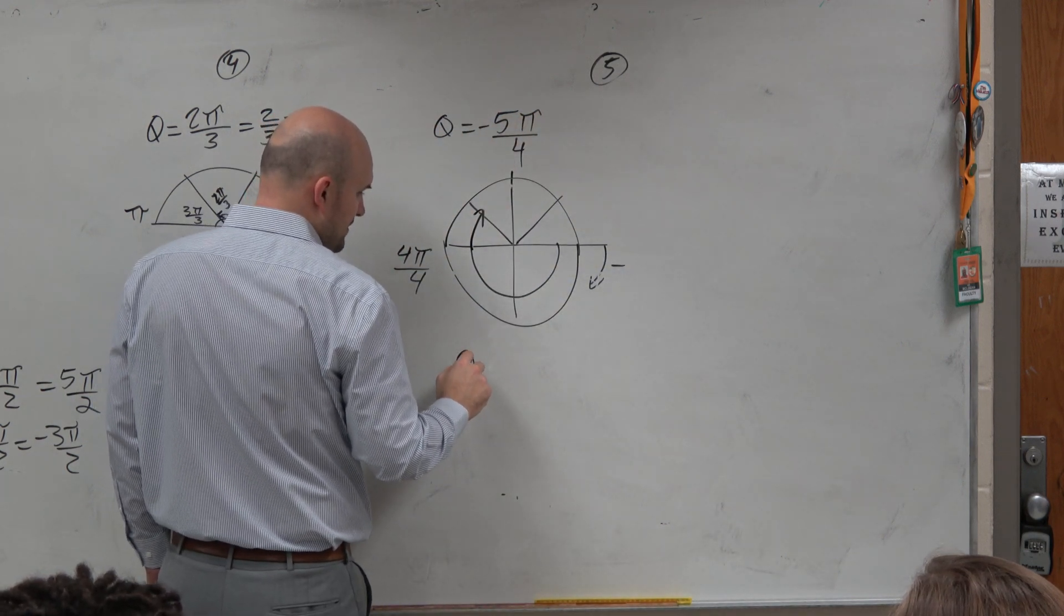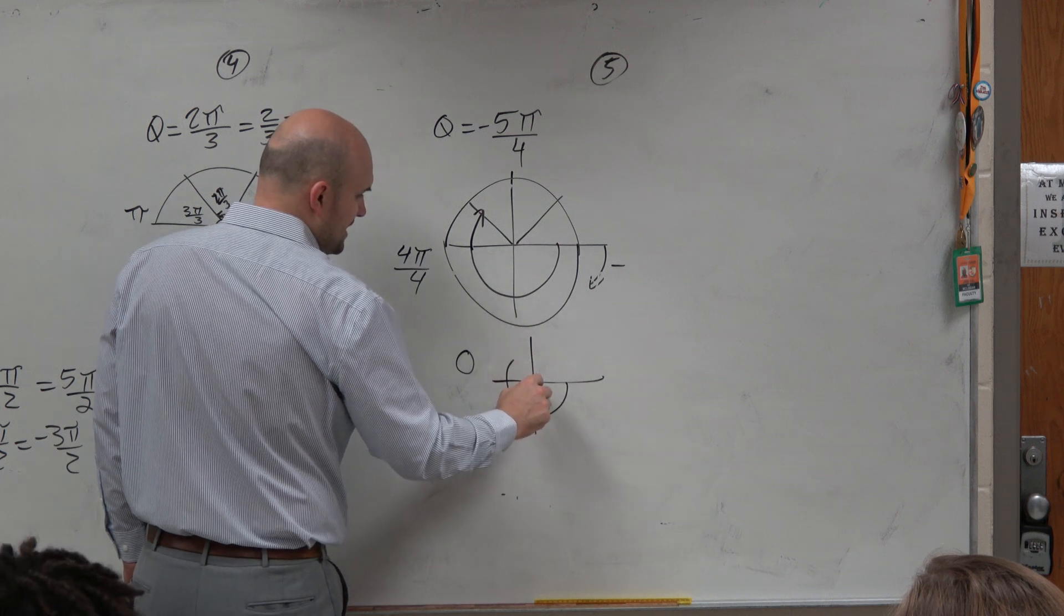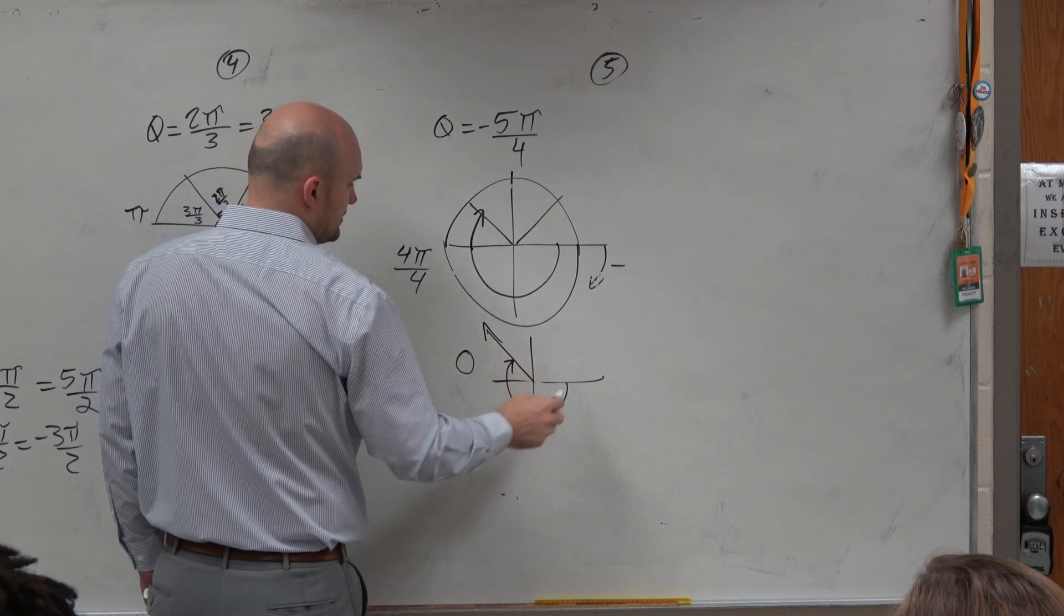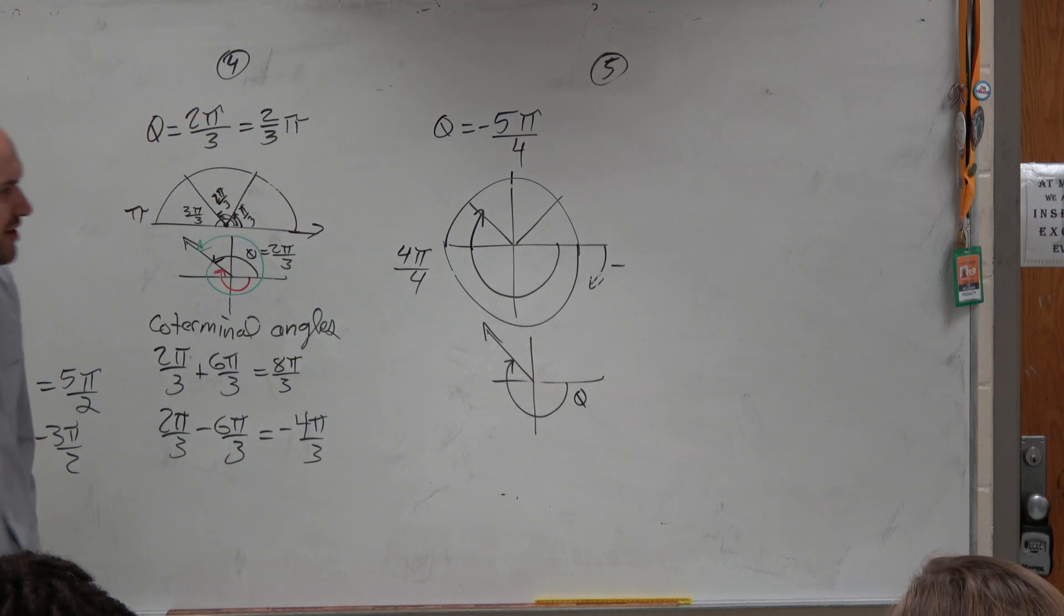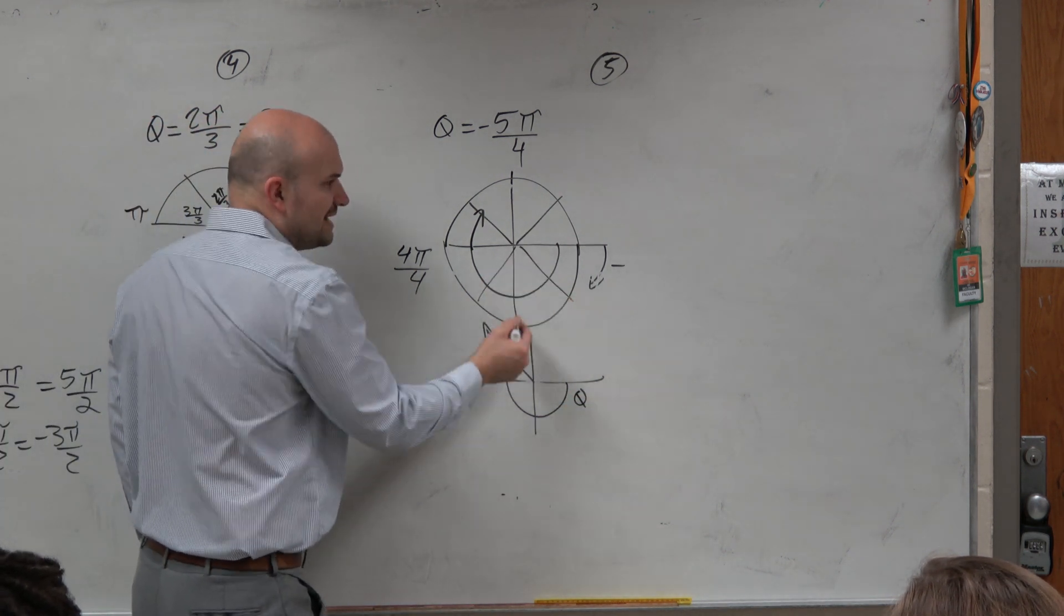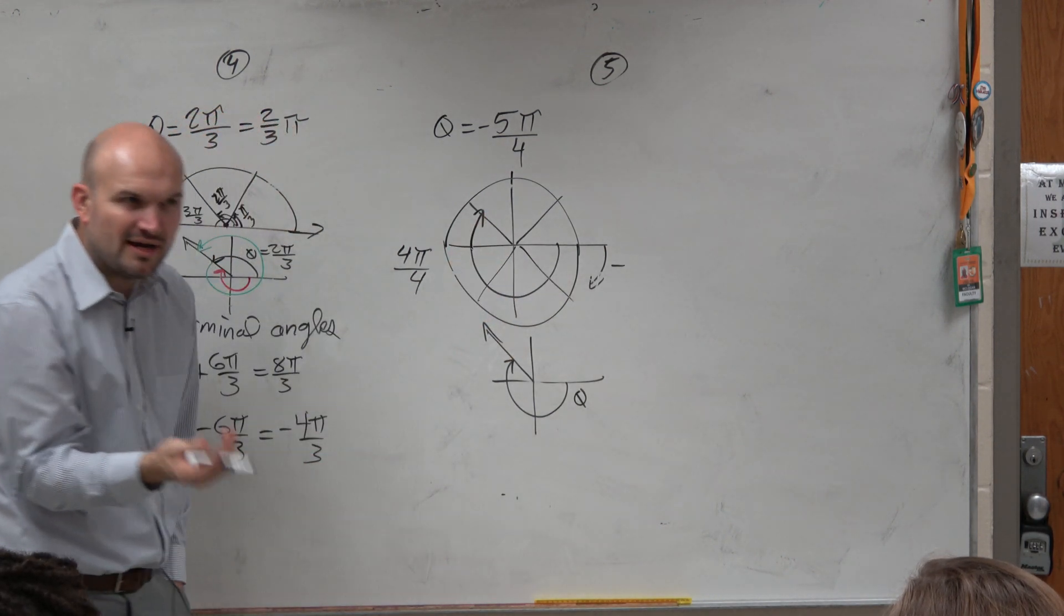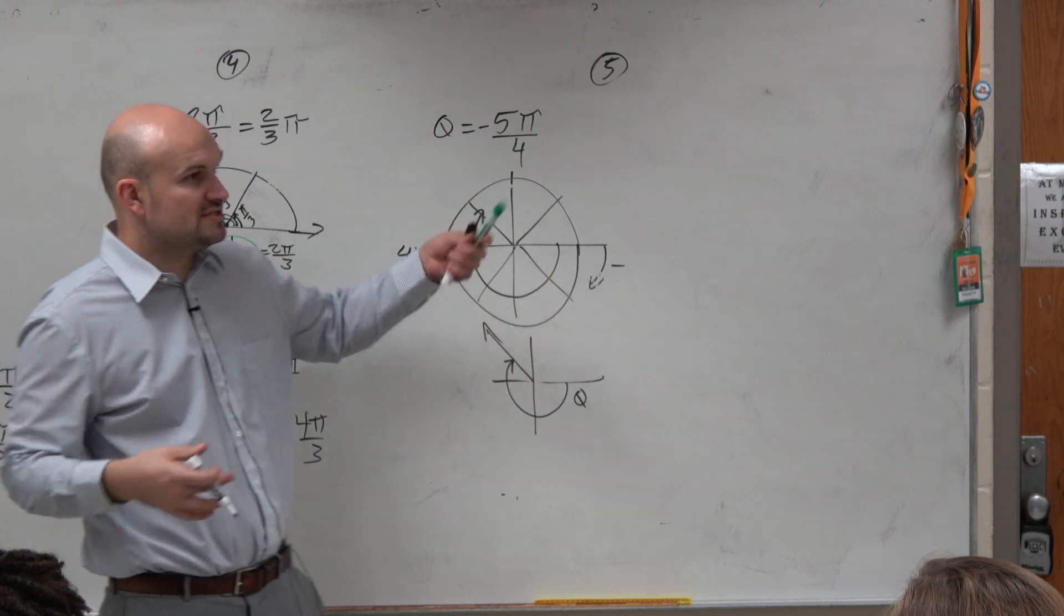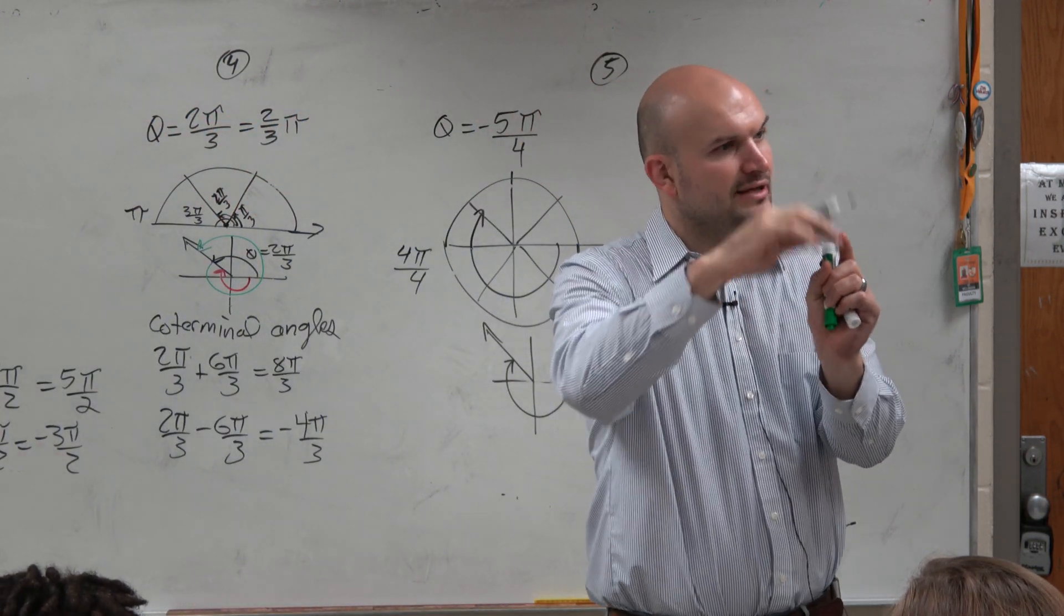So we could say, so my angle is just going to look something like that. You could break the bottom up if you wanted to and count 1 fourth, 2 fourths, 3 fourths, 4 fourths, 5 fourths, right? But if you guys already know something is larger than pi, then you can just start with pi and then go from there.